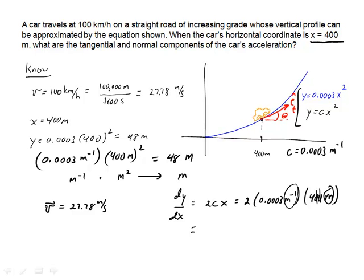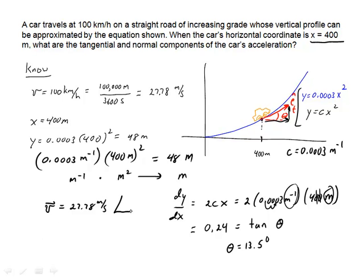So dy/dx equals 0.24 — dimensionless, as expected. The rise is the Y direction, the run is the X direction, so that equals the tangent of theta. Therefore, theta equals the arctangent of 0.24, which is 13.5 degrees. So now I know the direction of that velocity: 27.78 meters per second at an angle of 13.5 degrees. That's the direction of E tangential. E normal then points toward the inside of the curvature, always at 90 degrees to E tangential.